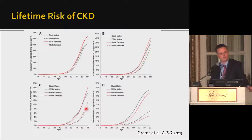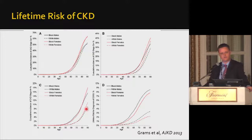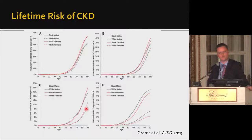One can argue this is just normal decline with aging, but consider hypertension: its lifetime risk is estimated at 90%, yet no one considers it a normal part of aging or a disease you don't treat. Similarly, the lifetime risk of diabetes in the United States is about 30%, not far from that of CKD. High lifetime risk does not mean we ignore these conditions, particularly in elderly patients.